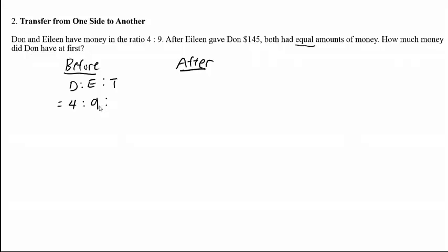Because when one side decreases by an amount, the other side also increases by the same amount. That's why the total remains the same. In this case, you take 4 plus 9, so the total is 13 units.